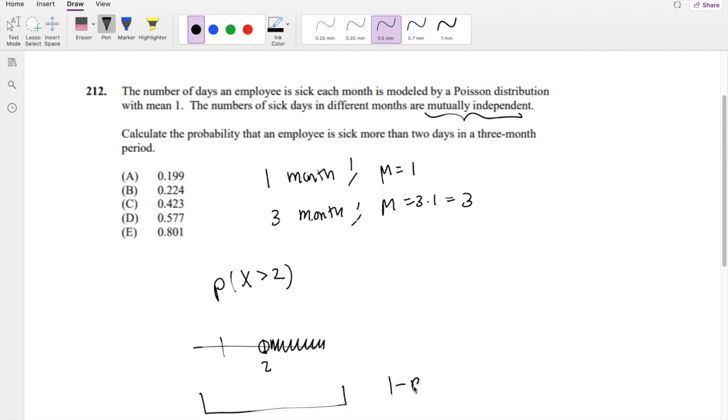1 minus the probability that X is 0, minus P(X=1). And because it's more than 2, not including 2, we have to take away P(X=2) as well. So 2 is included here.